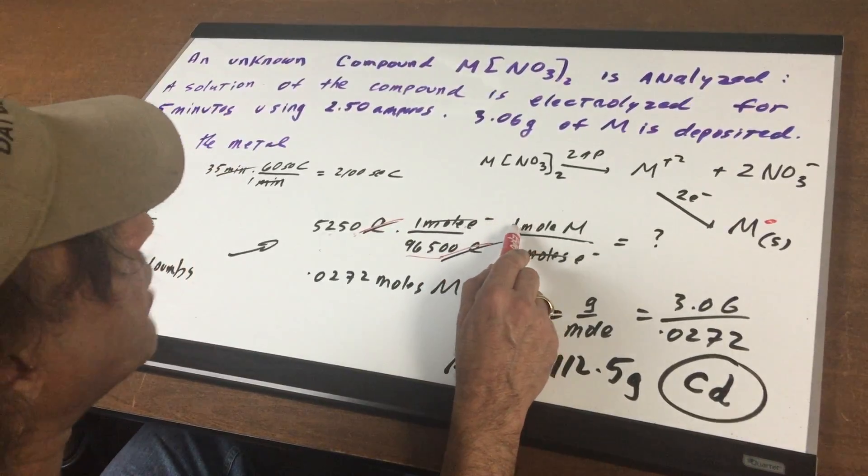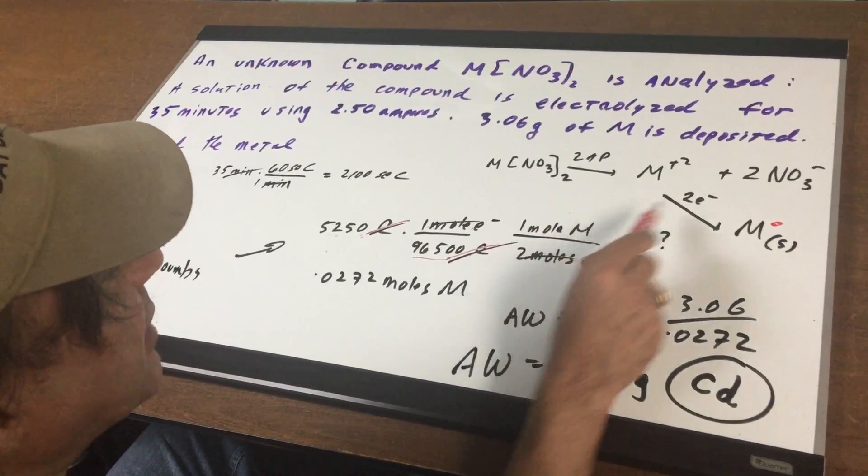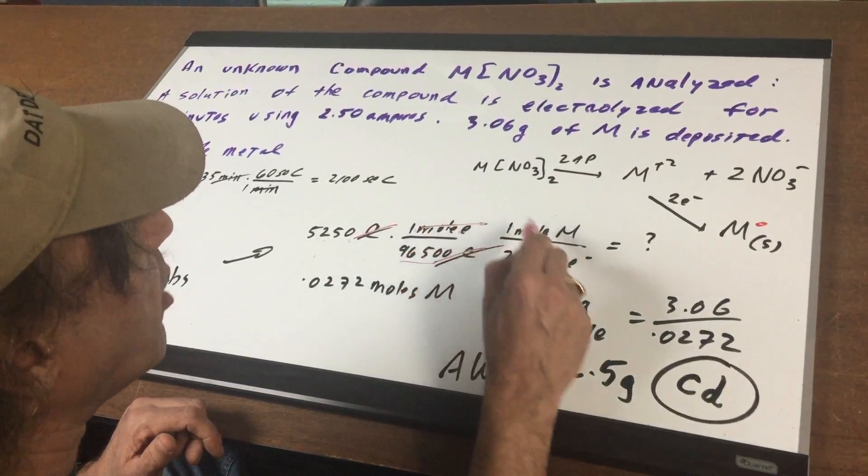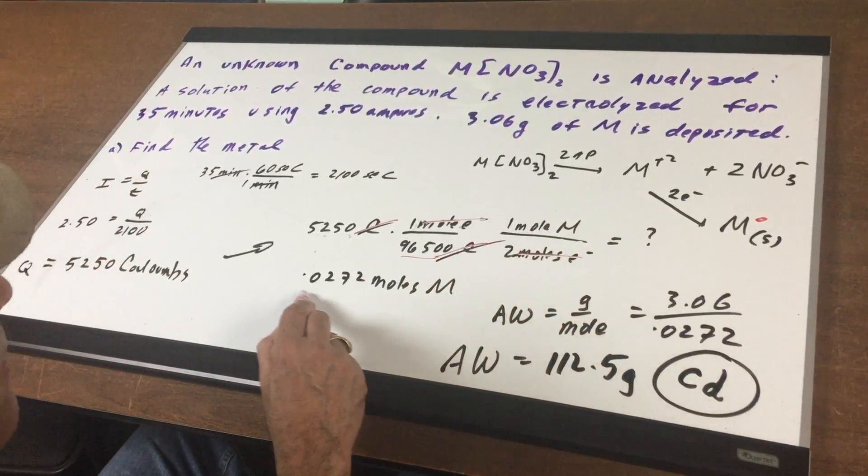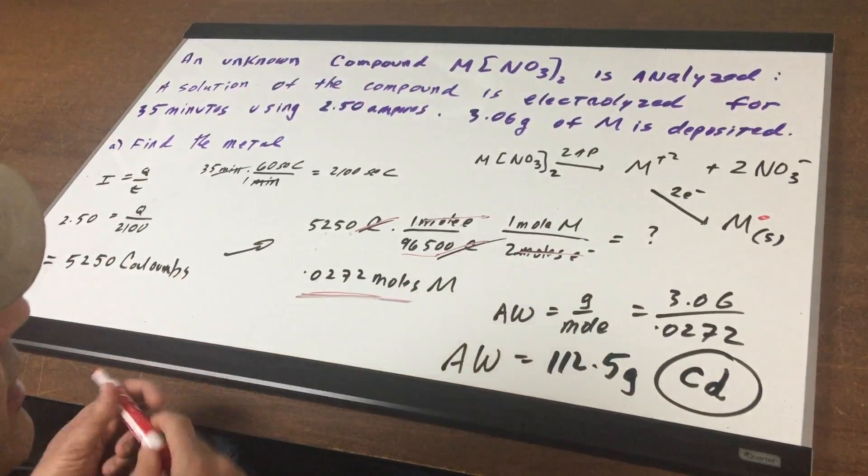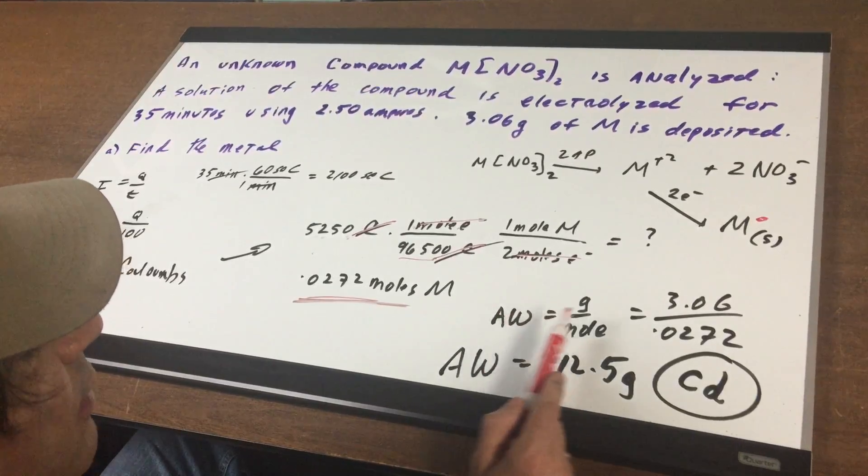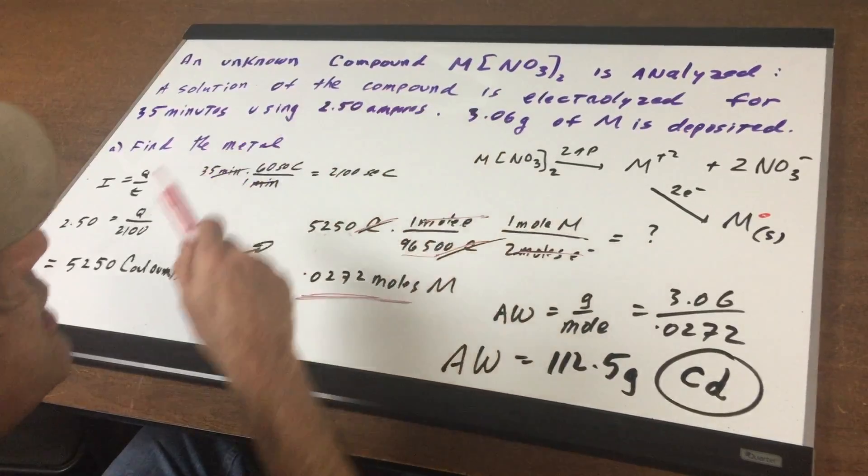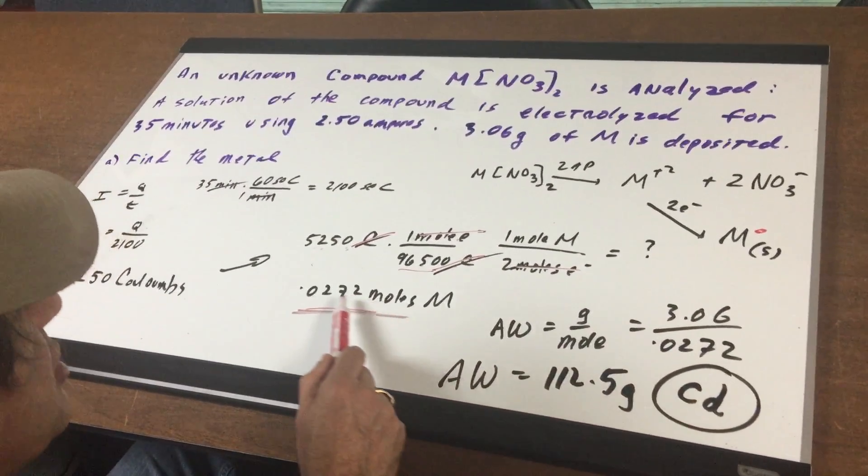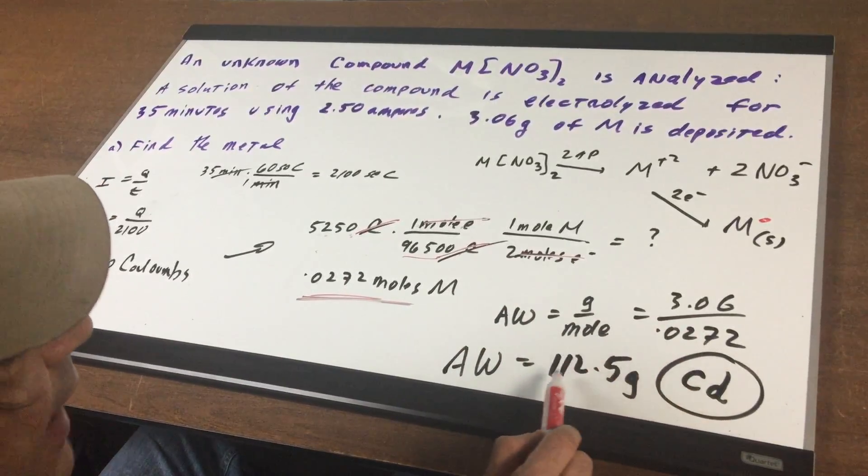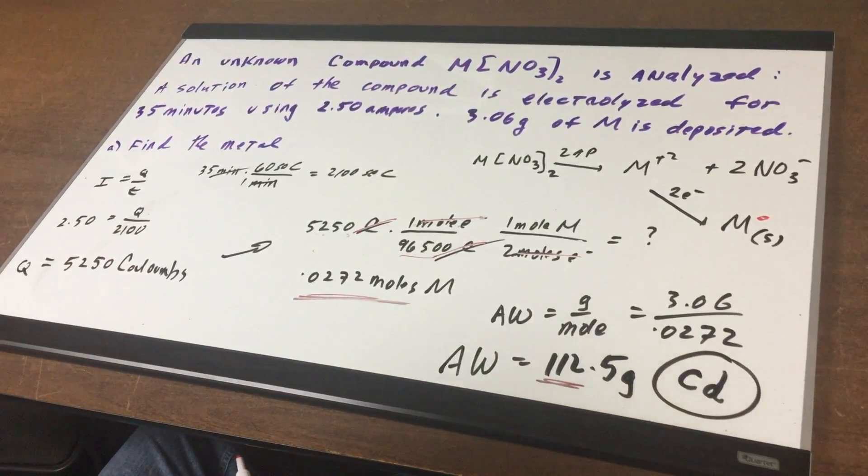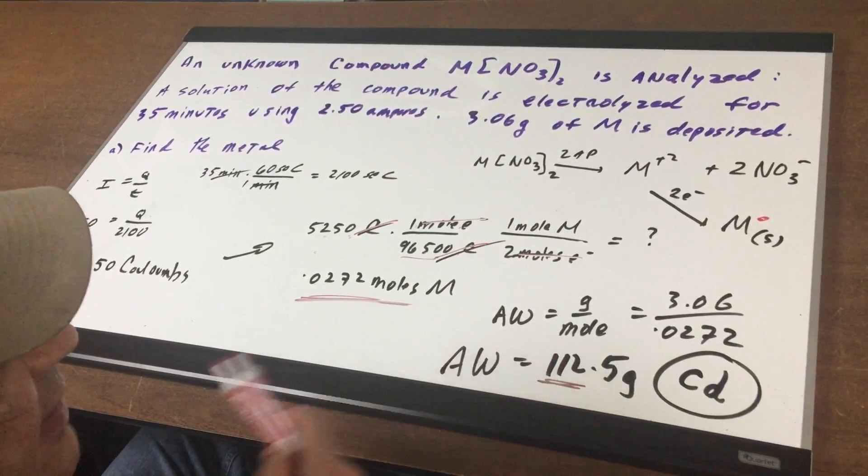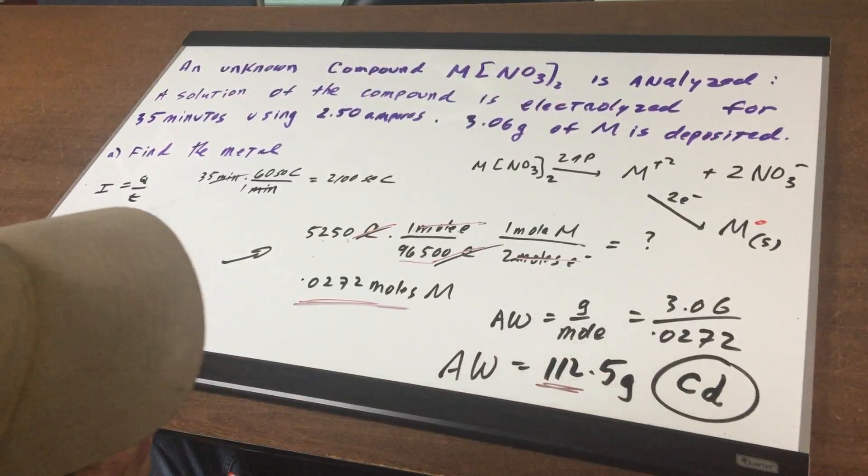Crosses out coulombs and one mole of electron or one mole of M as you can see here. One mole of M requires two moles of electrons. Moles of electrons cancel and I'm left with moles of M. Now the kill. The atomic weight of the metal is the grams of the metal over the moles. The grams of the metal deposited was 3.06. The amount of moles we got is 0.272. Dividing it out gives me 112.5 and all I do is I simply go to the periodic table and look up what element is closest to that and it's the element cadmium.